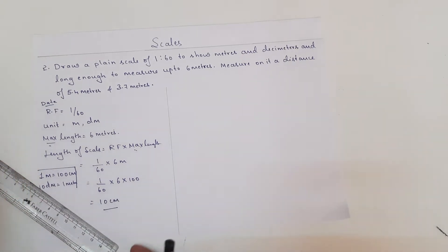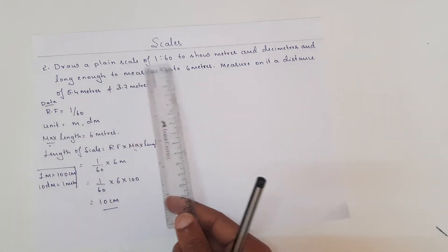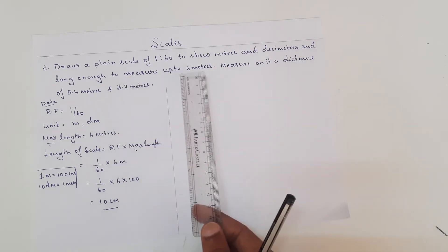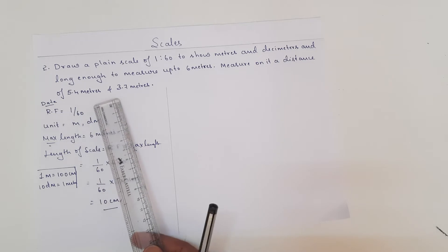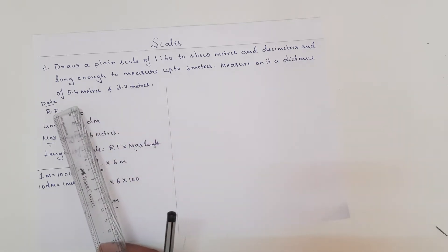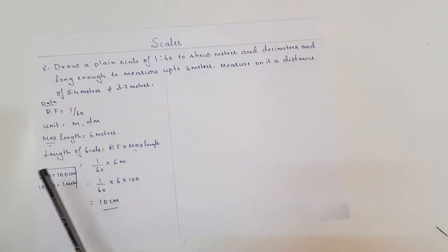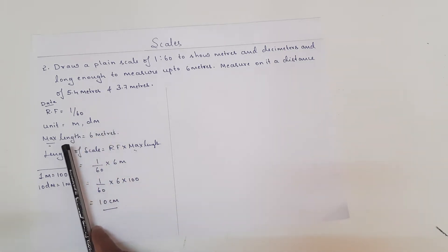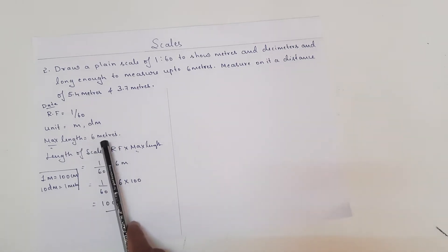Hello friends, welcome to the class on scales. Today we are going to discuss another problem. The problem is: draw a plane scale of 1 is to 60 to show meters and decimeters, long enough to measure up to 6 meters, and measure on it a distance of 5.4 meters as well as 3.7 meters. The data required: RF value is 1/60, units are meter and decimeter, and the maximum length to construct is 6 meters.